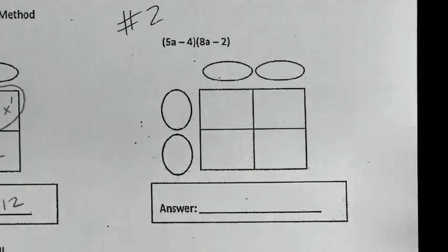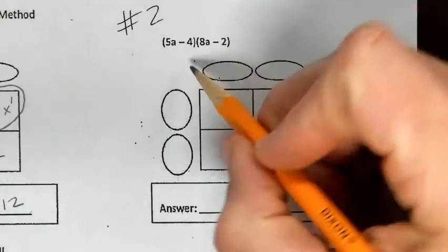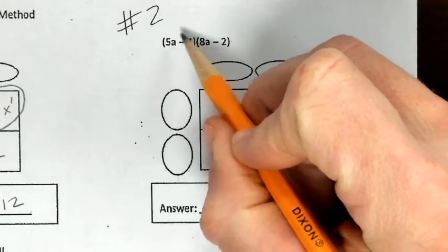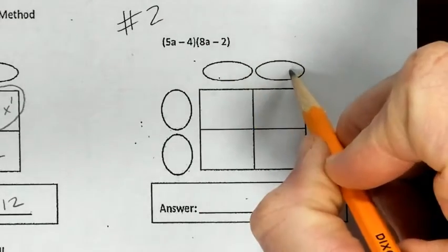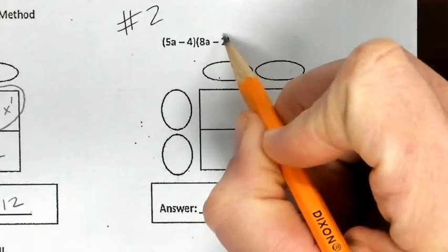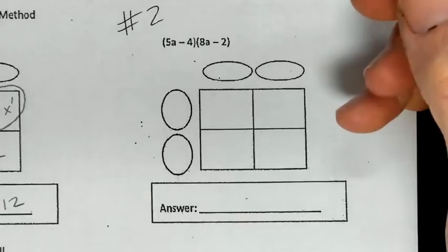The next example using the box method is number two. Once again, I'm going to take one of these binomials and put it in the top two boxes. I'm taking the other binomial and putting it in the bottom two boxes.